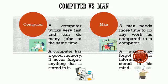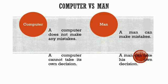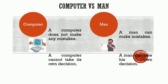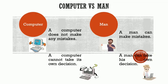A man may sometimes forget information stored in his mind — like when mama told us something to do and we forgot! A computer does not make any mistakes, but a man can make mistakes, for example when doing a calculation. A computer cannot take its own decision, but a man can decide what he wants to do.